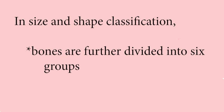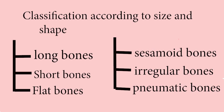Size and shape classification: bones are further divided into six groups — long bones, short bones, flat bones, sesamoid bones, irregular bones, and pneumatic bones.